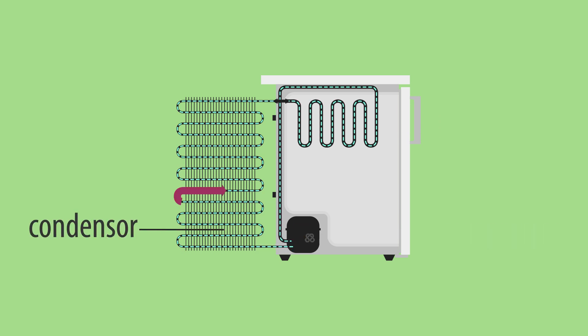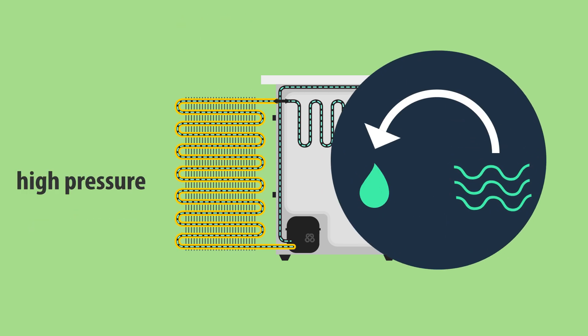As it flows through the condenser at the back of your fridge, the coolant now radiates its heat away to the ambient air. Here it condenses under pressure, turning most of the coolant into a liquid.